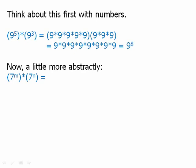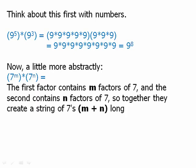Now think about that a little more abstractly. We have seven to the m times seven to the n. The first contains m factors of seven multiplied together and the second contains n factors of seven multiplied together. So if I just multiply all the factors of seven together, I'm going to get a whole string of factors of seven and there will be m plus n factors of seven in that string. So this should equal seven to the m plus n.